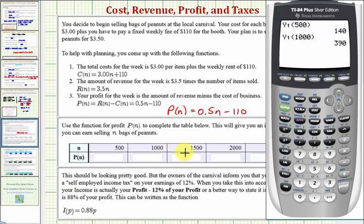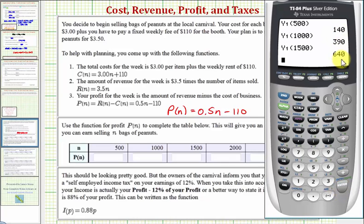Now we'll enter Y1 of 1,000. Because we already have Y1 on the home screen, an easy way to find Y1 of 1,000, which is actually P of 1,000, would be to press second enter, which brings up the previous entry, but now we can edit the entry. So we can left arrow and change the 500 to 1,000. Close parenthesis and enter. Here's the profit when N equals 1,000.